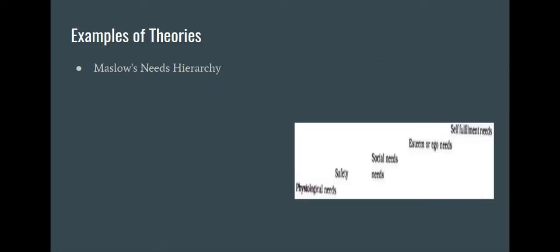An example of a motivational theory is Maslow's Needs Hierarchy. So it starts off with physiological needs. This would be simply being able to survive. It would be food, water, shelter. It's just what's essential.